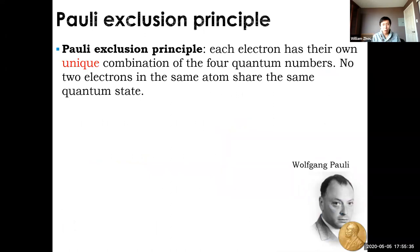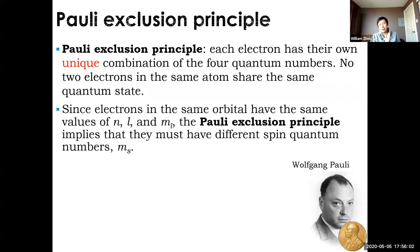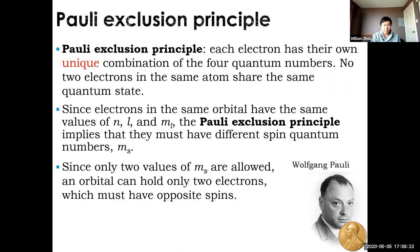Now that we've learned all four quantum numbers, we can learn the Pauli exclusion principle. This simply says each electron in an atom must have its own unique combination of quantum numbers — no two electrons from the same atom have exactly identical four numbers. You can share the first three, but the last (spin) must be different. If N, L, and ML are the same, you're in the same orbital, so MS must differ. Since only two values of MS are allowed, you can have two electrons per orbital.